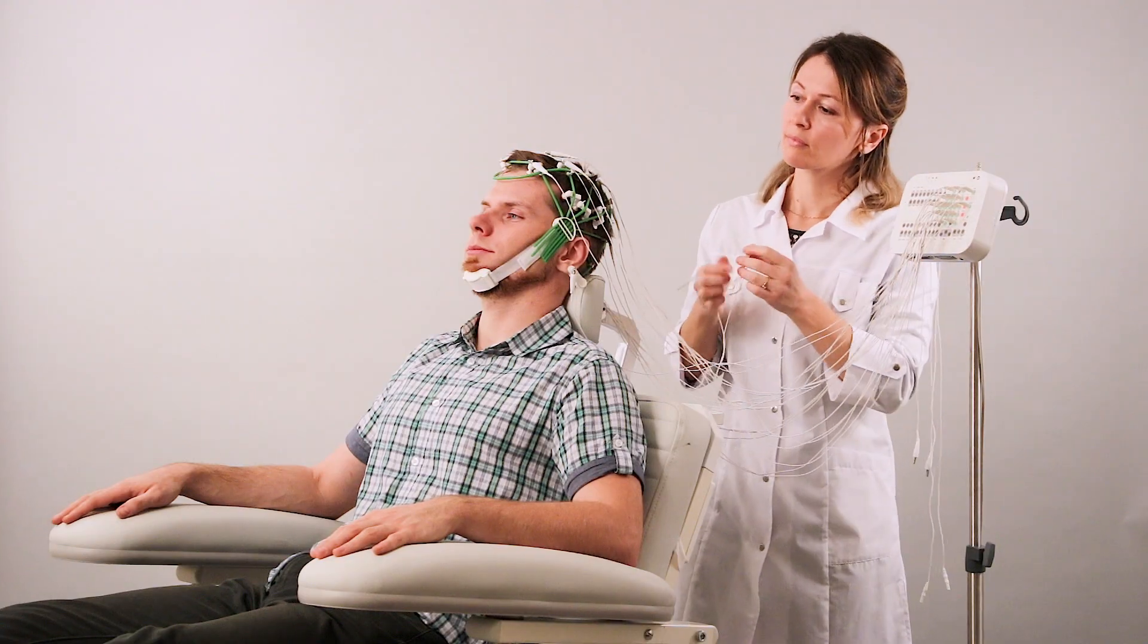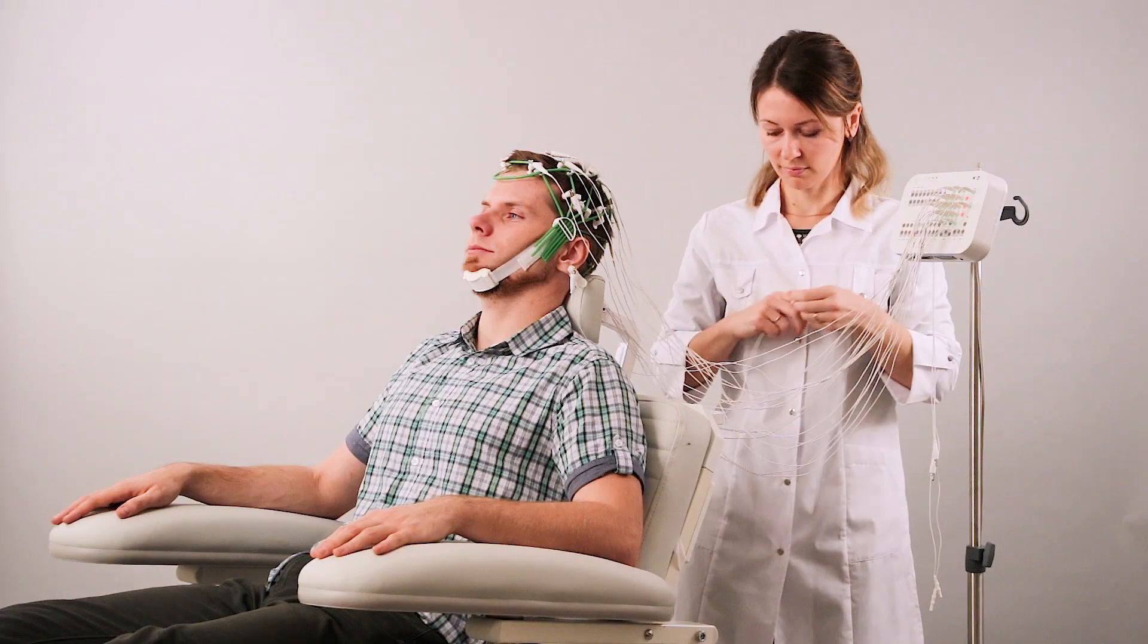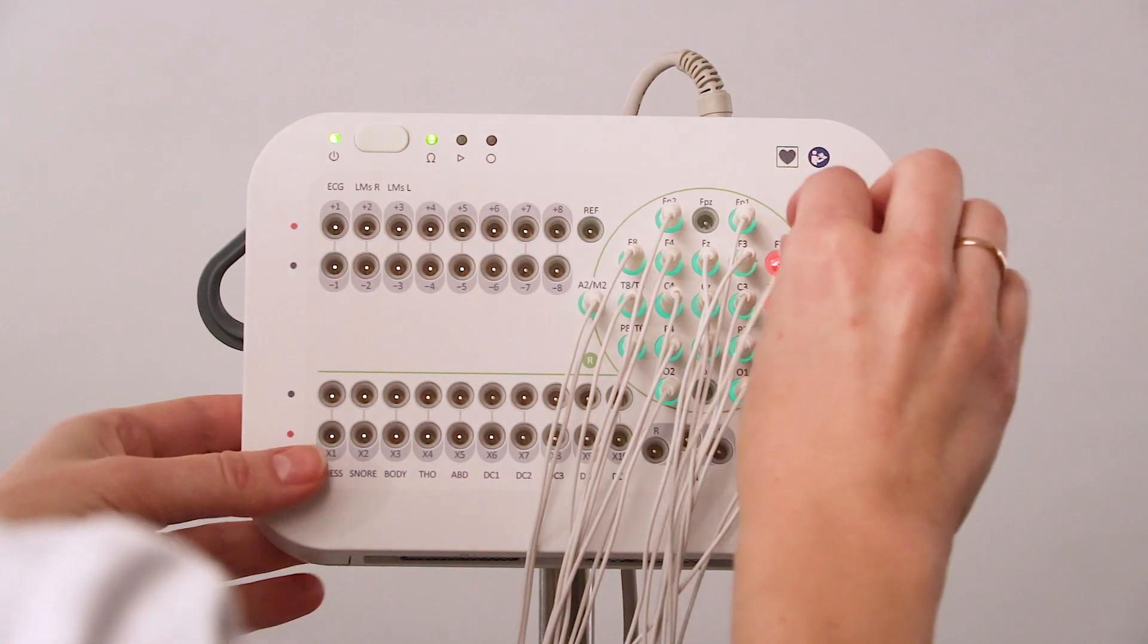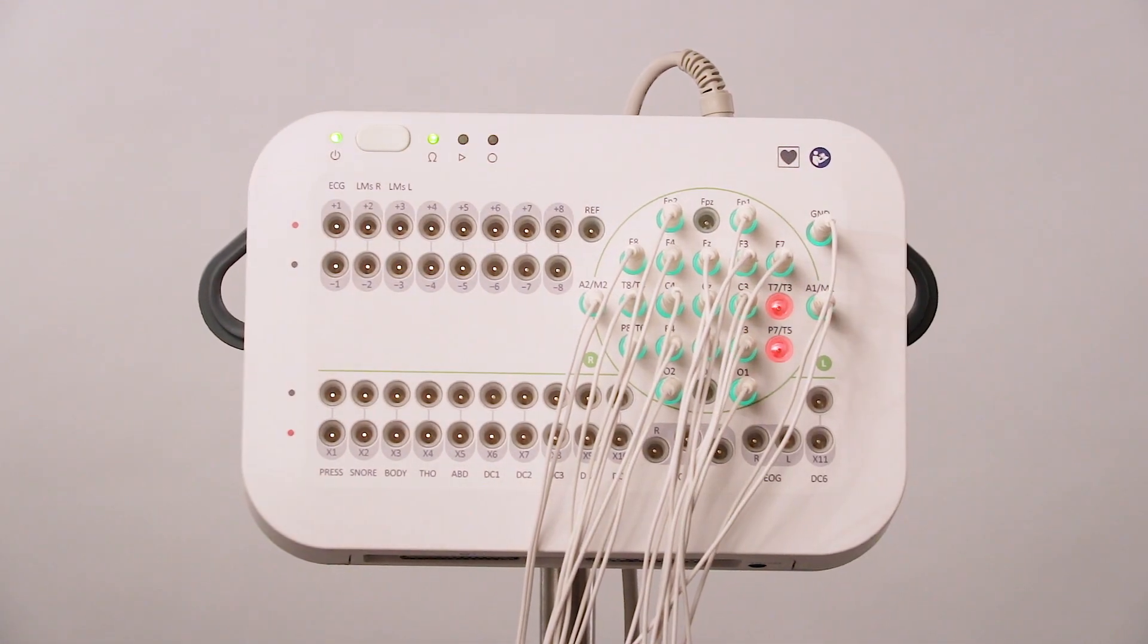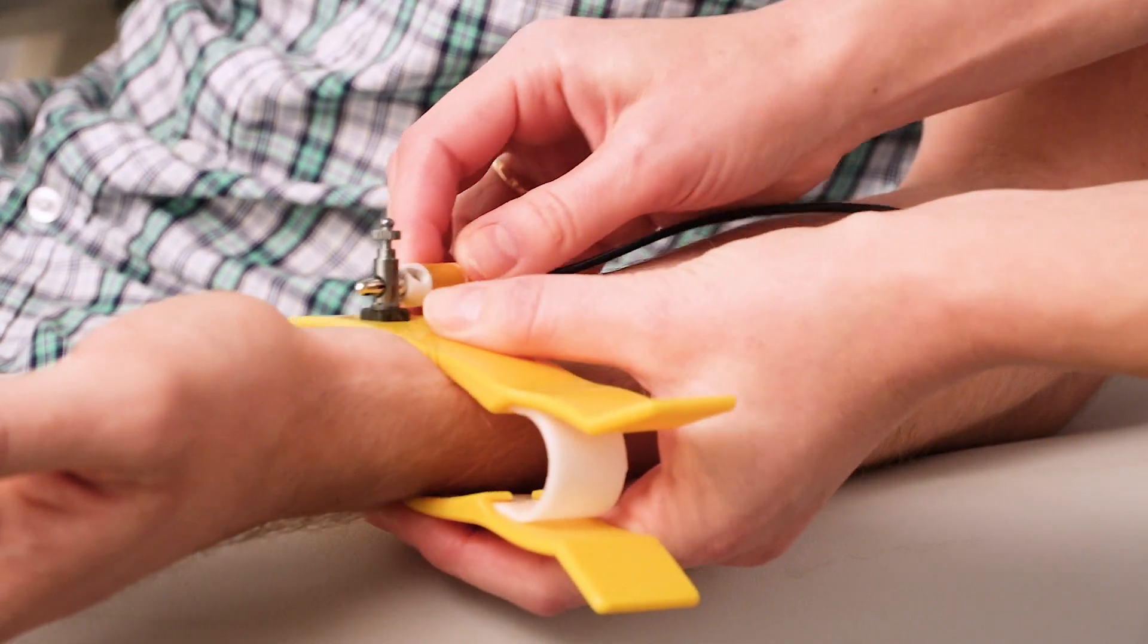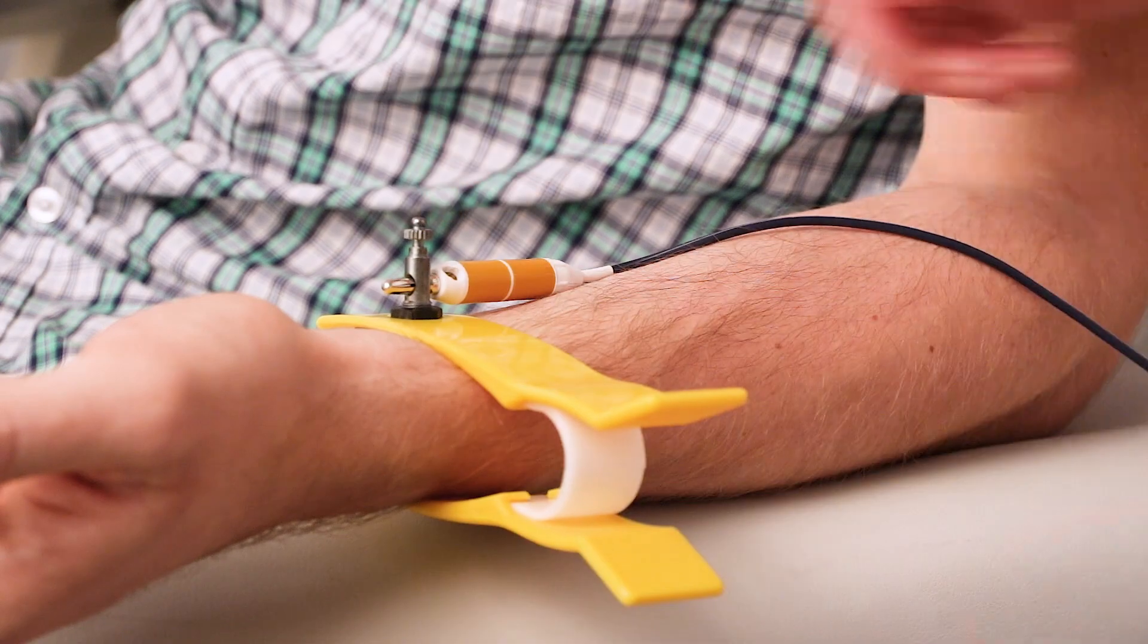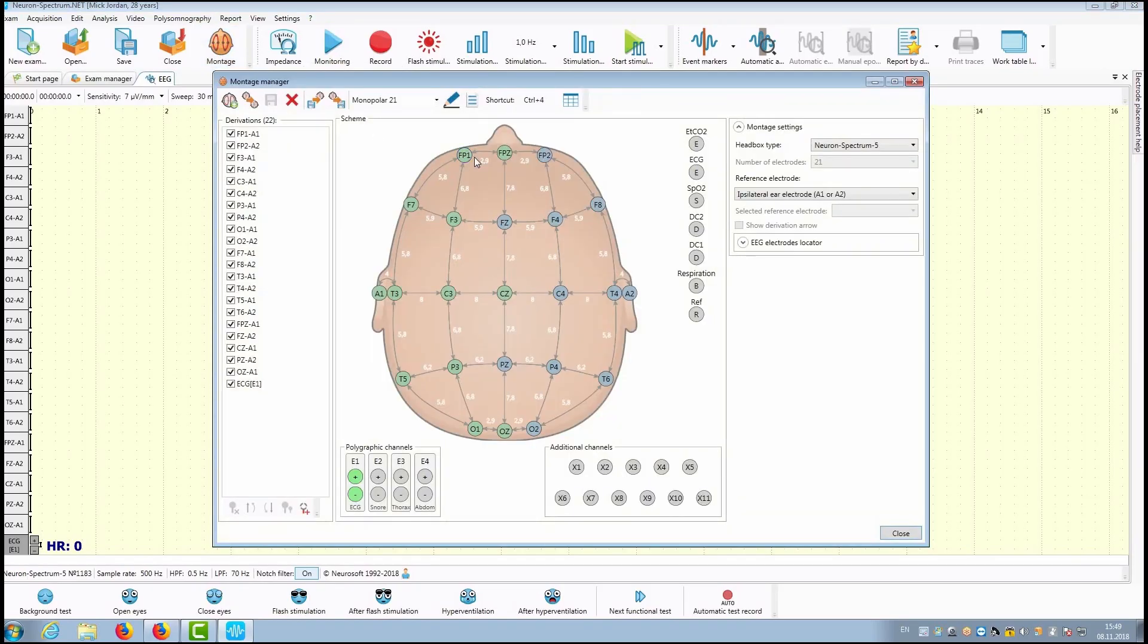Getting started is fast and easy. Place bridge or cup electrodes on the patient's head or use electrode cap. Put the ECG electrodes on the patient's hands. Check the impedance. Open the NeuronSpectrum.net program. Choose the montage and start EEG acquisition.